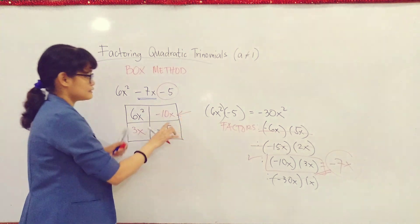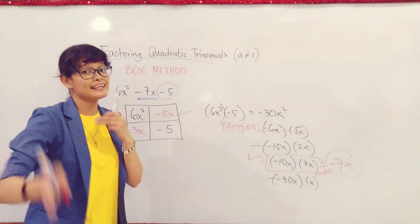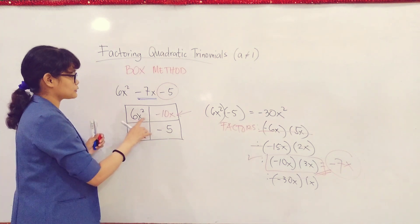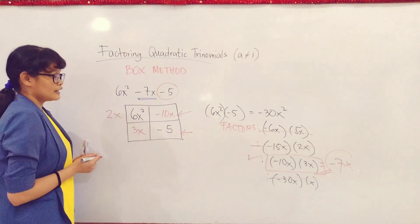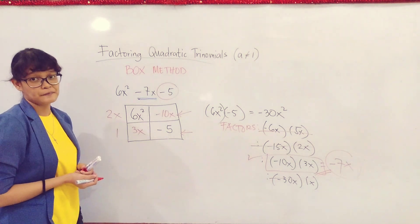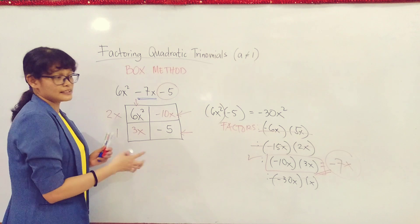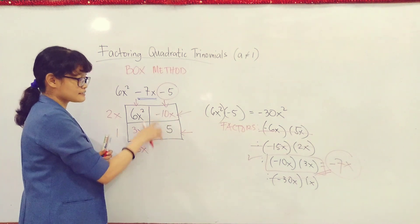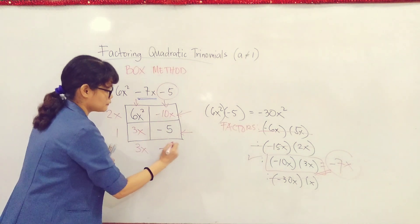So let's start with this. Our signs are different - some are negative, some are positive. So to avoid confusion, let's take our GCF as positive first, then we'll decide later what signs to change. So what is the positive common factor of 6x² and -10x? It is positive 2x. Next, here. What's the positive common factor of 3x and -5? They're relatively prime, which means none. Next, per column. What's the positive greatest common factor of 6x² and 3x? It is 3x. Next, going down, -10x and -5. Since they have the same sign, I will be carrying the negative sign already. So what's the common factor of 10x and 5? It is equal to -5.